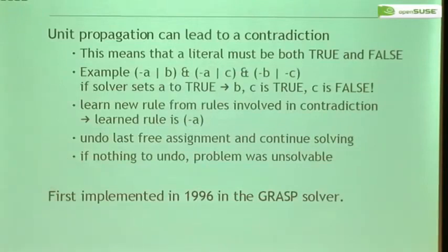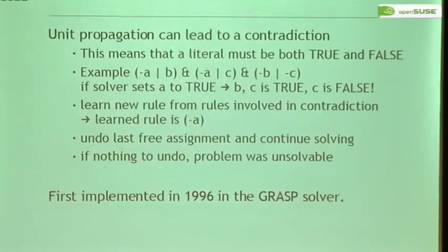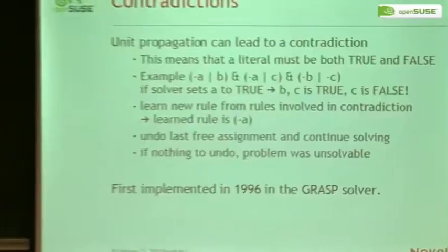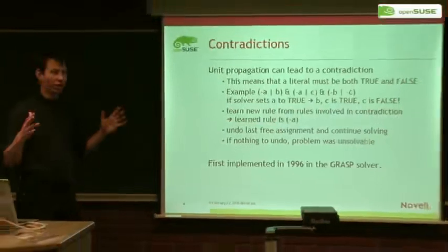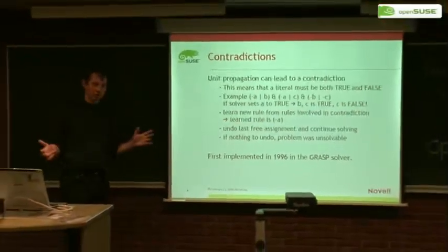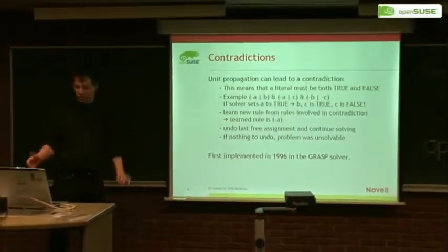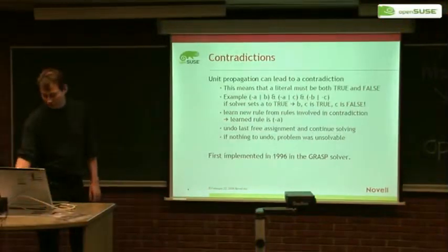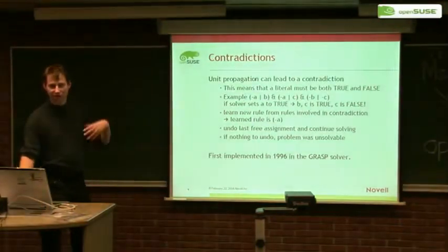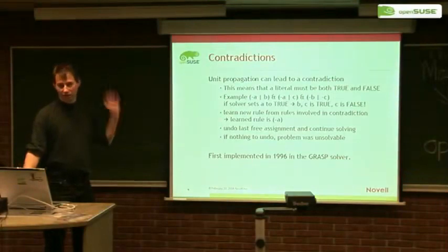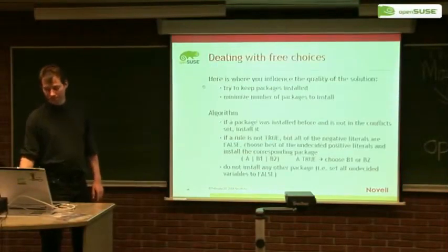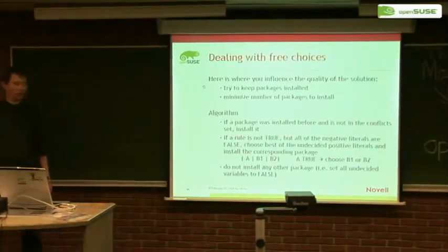The idea of learned rules was a major breakthrough for SAT solving — it happened in 1999 and was first implemented in the zChaff solver. This is really what makes solving reliable, so that if there is a solution the SAT solver will always find it. Otherwise it will return a proof of why it's unsolvable. The code is really reliable because of this, and it doesn't get stuck in an endless loop like the old solver did.